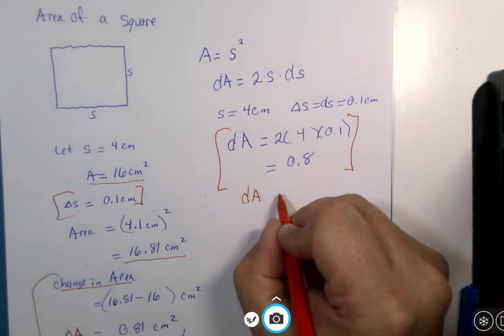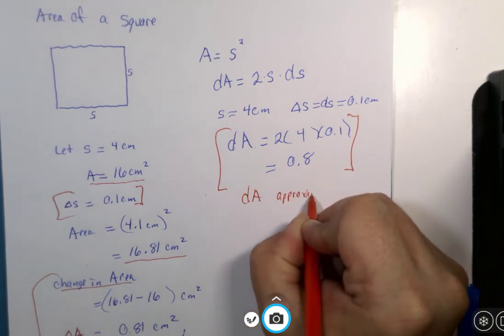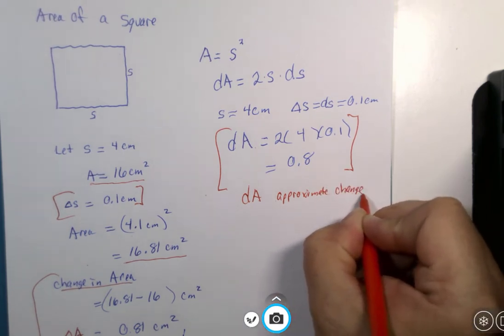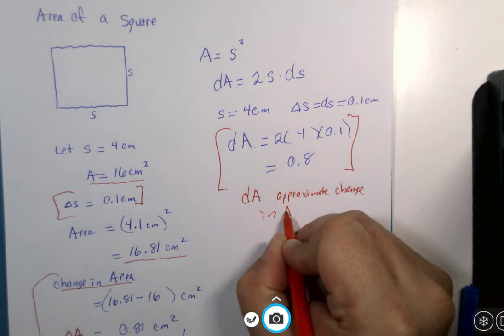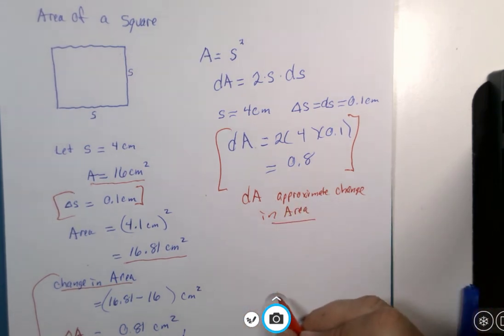dA is the approximate change in area. Approximations are not exact by definition. Again, the Calc 1 teacher would have shown a number of other cases, maybe even some local linearizations on a curve.